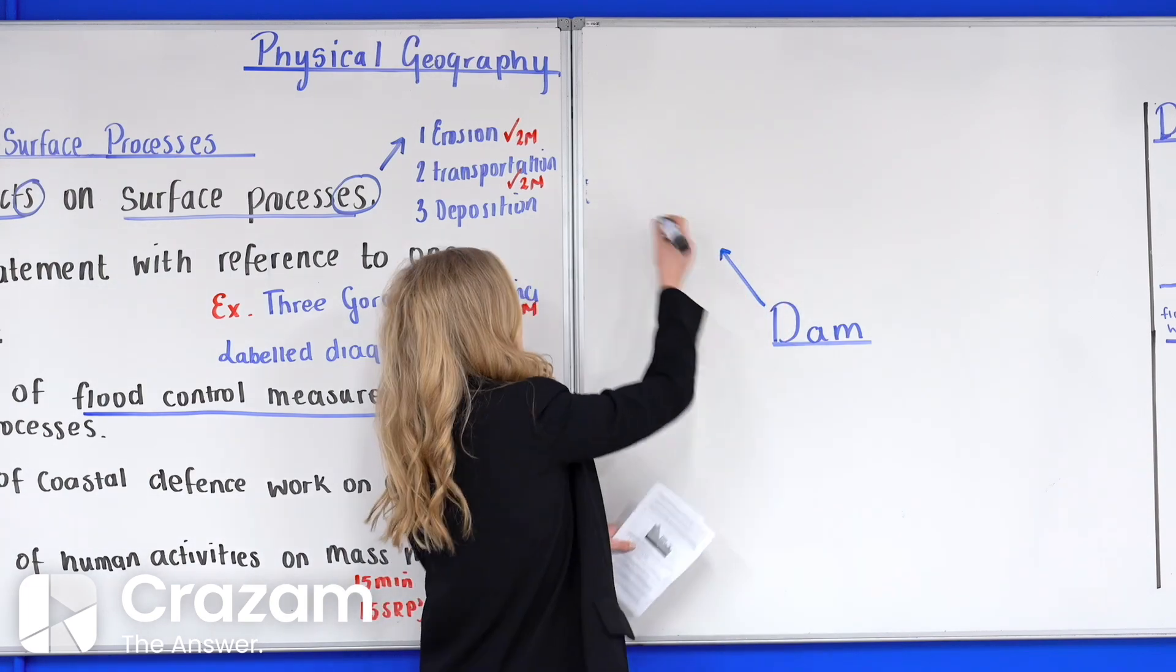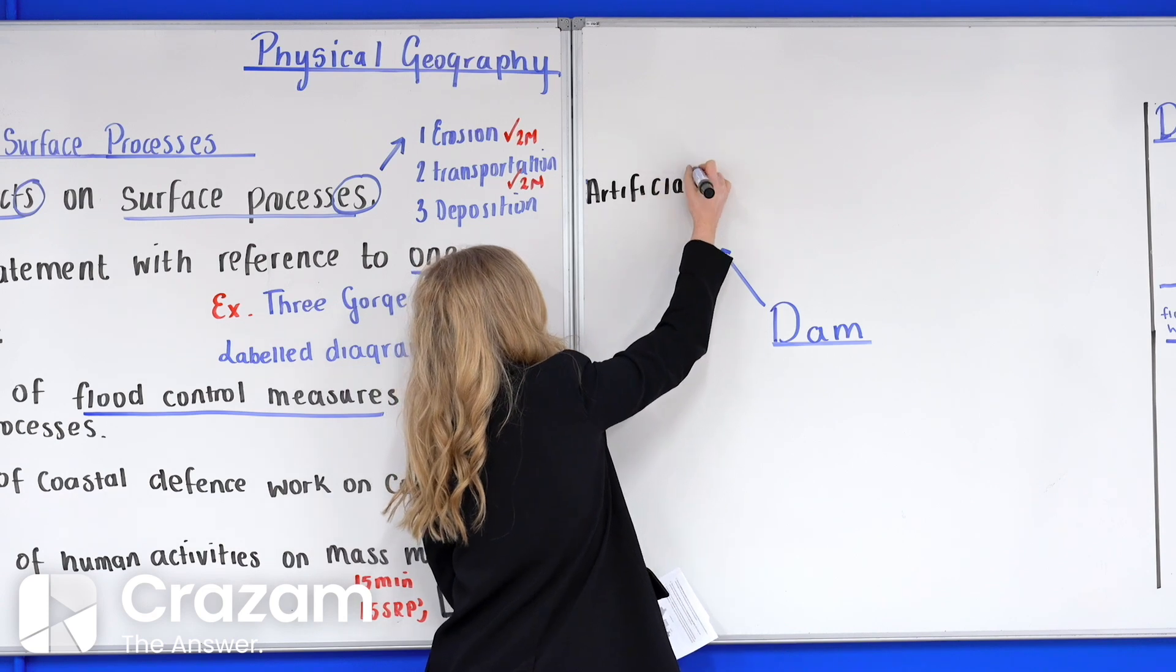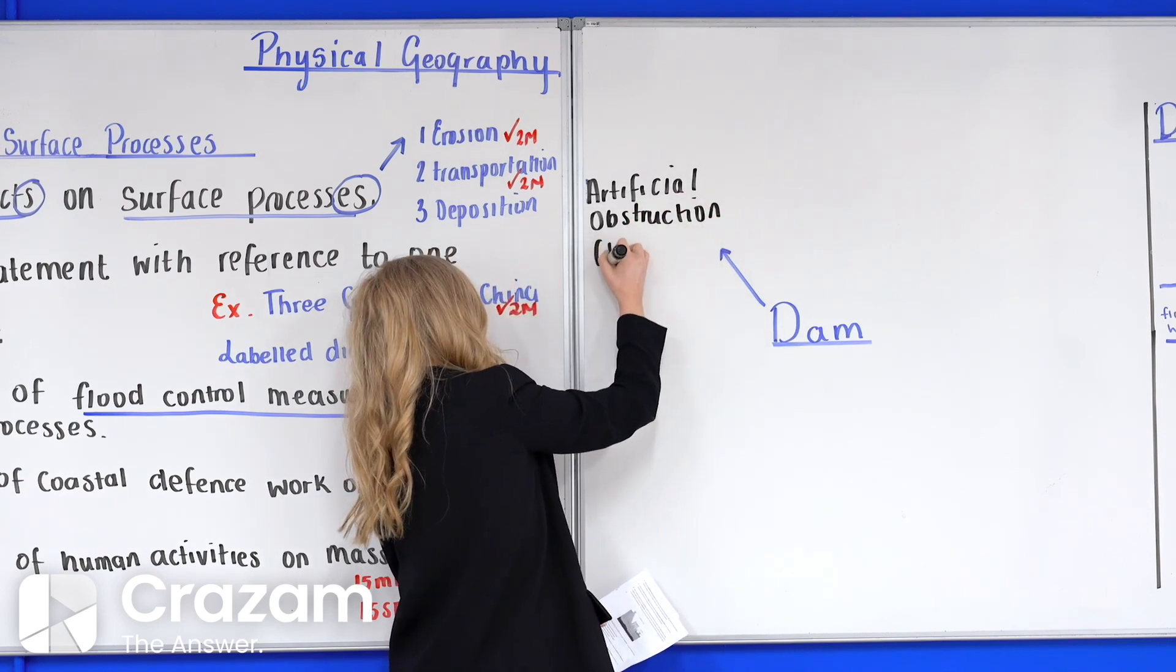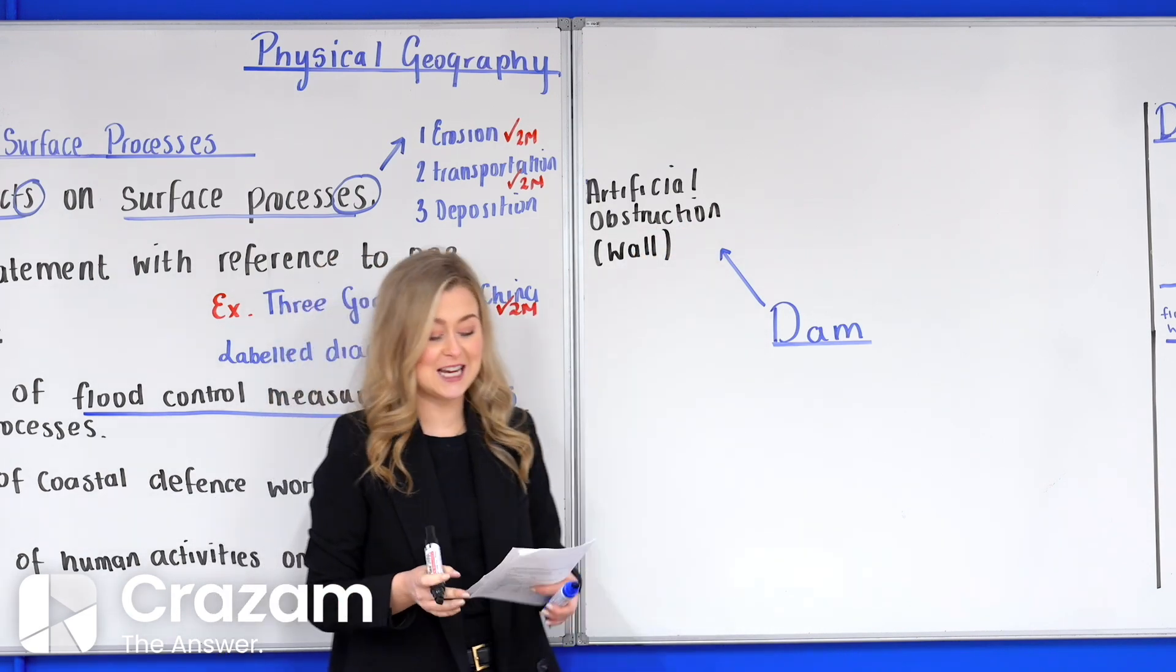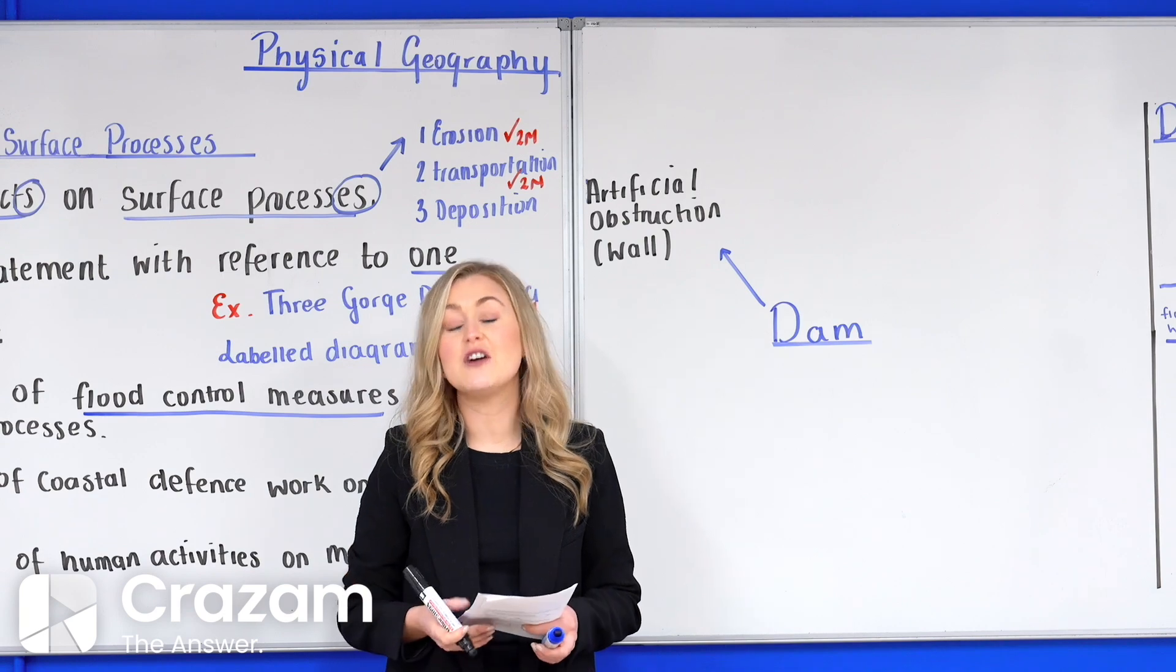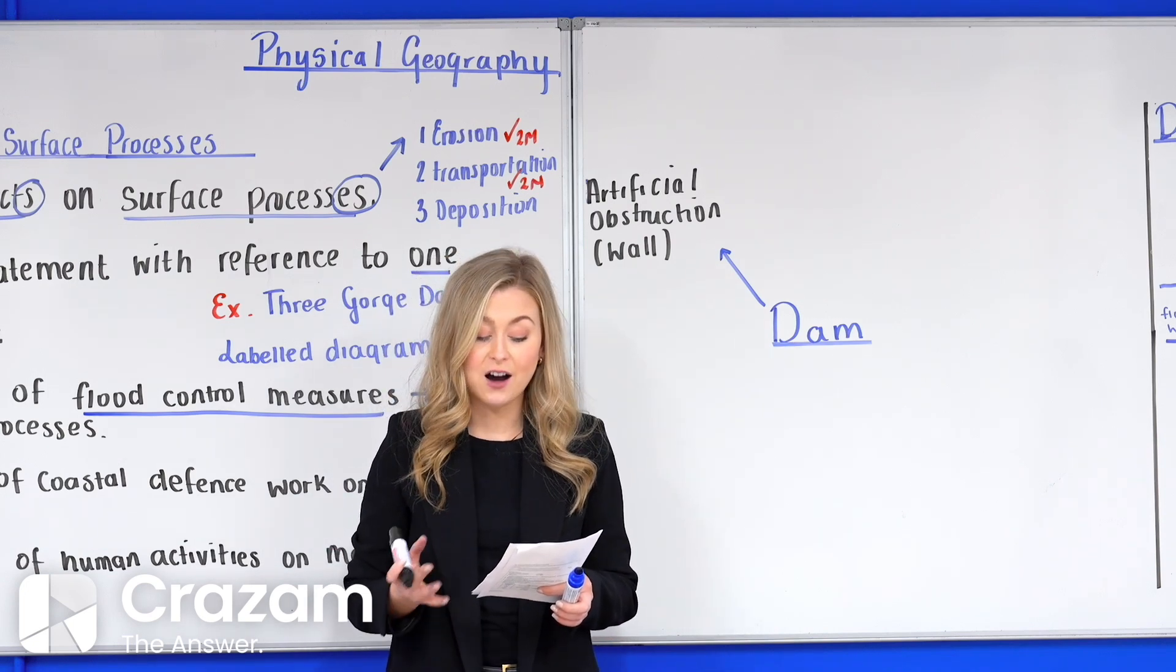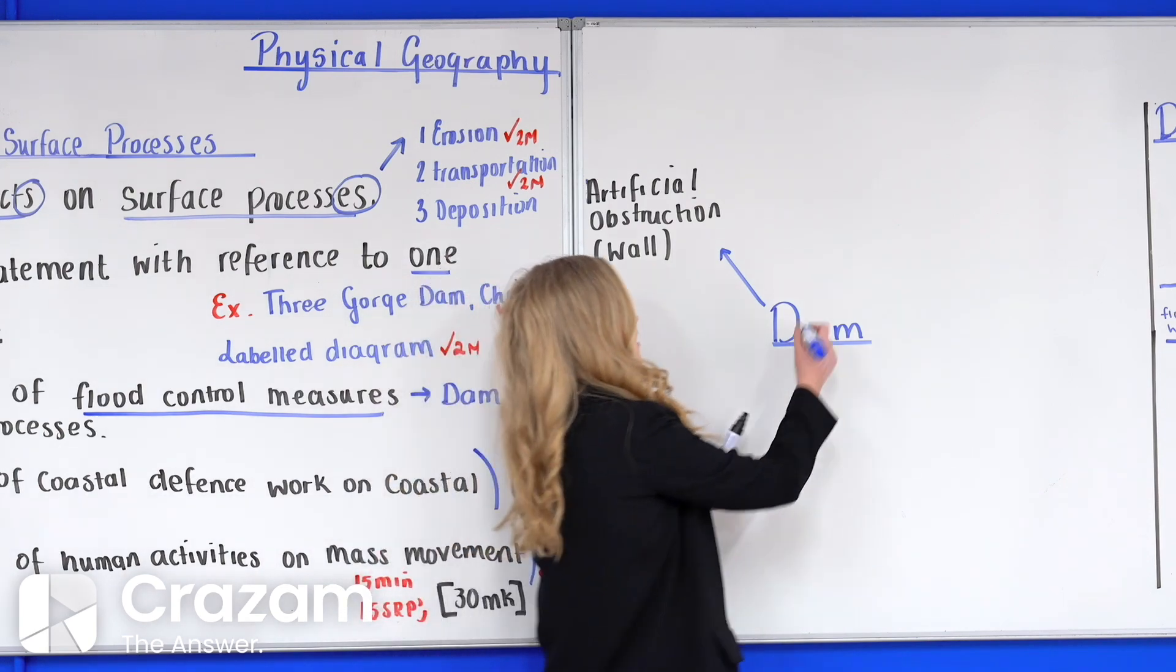Dams are artificial obstacles or walls built across the course of the river. Normally they are built in the youthful or mature stages early mature stages of the river where the river is fast flowing due to its steeper gradient. So first of all I'm going to pop down what actually is a dam. It is an artificial obstacle or obstruction. That obstruction really is very similar to a wall built across the river in the youthful or the mature stages.